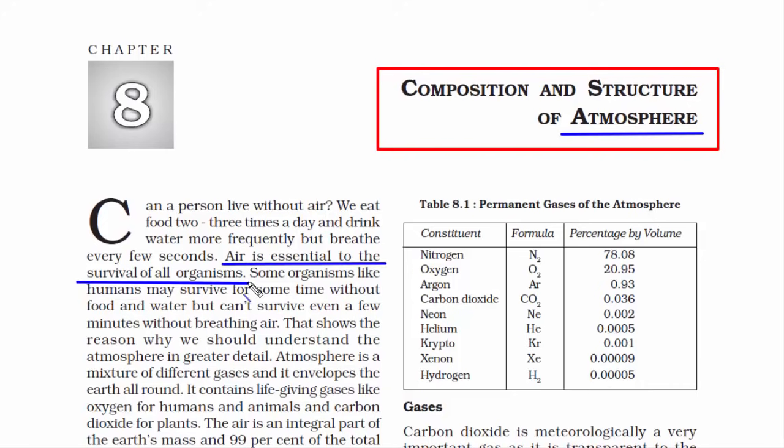It has layers of gases surrounding the earth. While it may just look like one vast blue sky when we look up, there's a lot that goes on there. The atmosphere is divided into 5 layers about which we will read as we go forward. It is essential to the survival of all organisms because it contains life-giving gases like oxygen for humans and animals and carbon dioxide for plants.